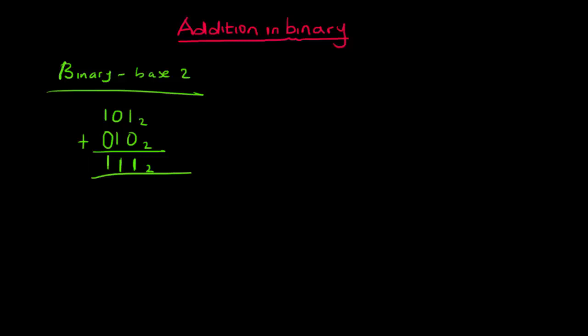Don't forget to always put the base. Now let's take another example: if I have 110 in base two plus 10 in base two. Zero plus zero gives you zero. Now one plus one gives you two, but I can't write two because in base two, for a number to be correct, each of the individual digits must be less than two. So if I write two here, that number cannot be correct in base two.